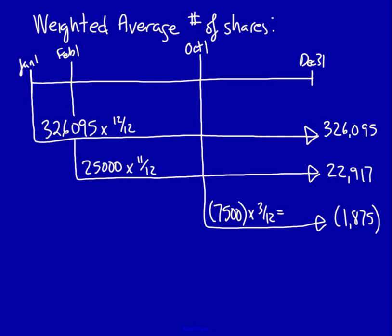Those 1,875 shares are equivalent to the 7,500 for a period of 12 months. Adding those together, we get the weighted average number of shares, which is equal to 347,137. Those are the weighted average number of shares.